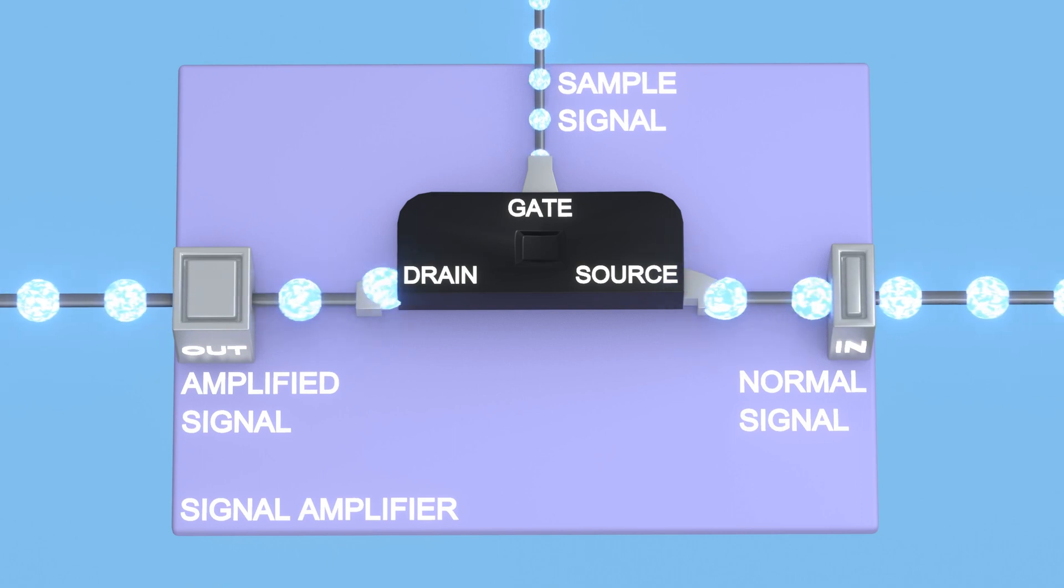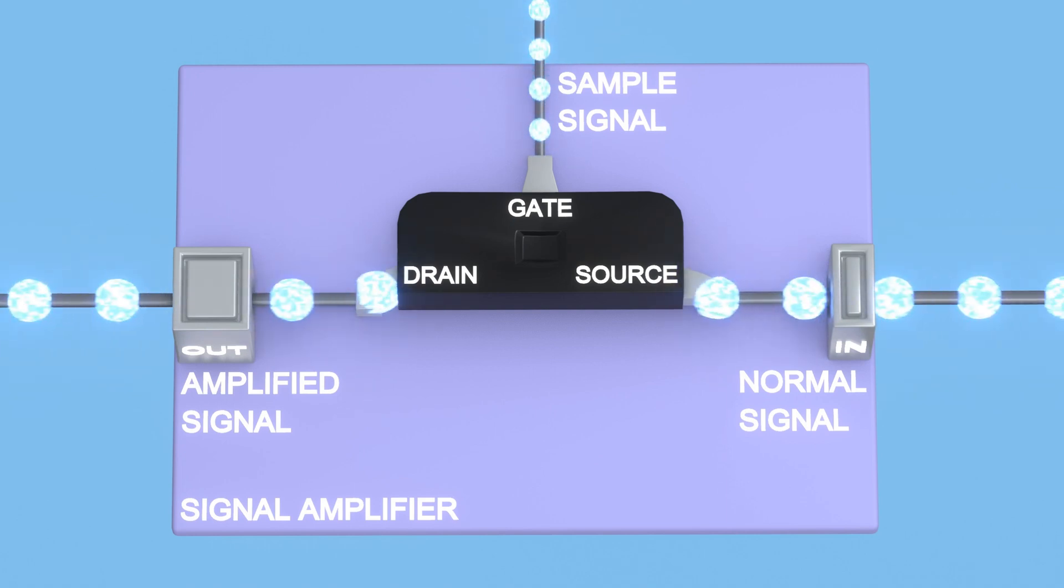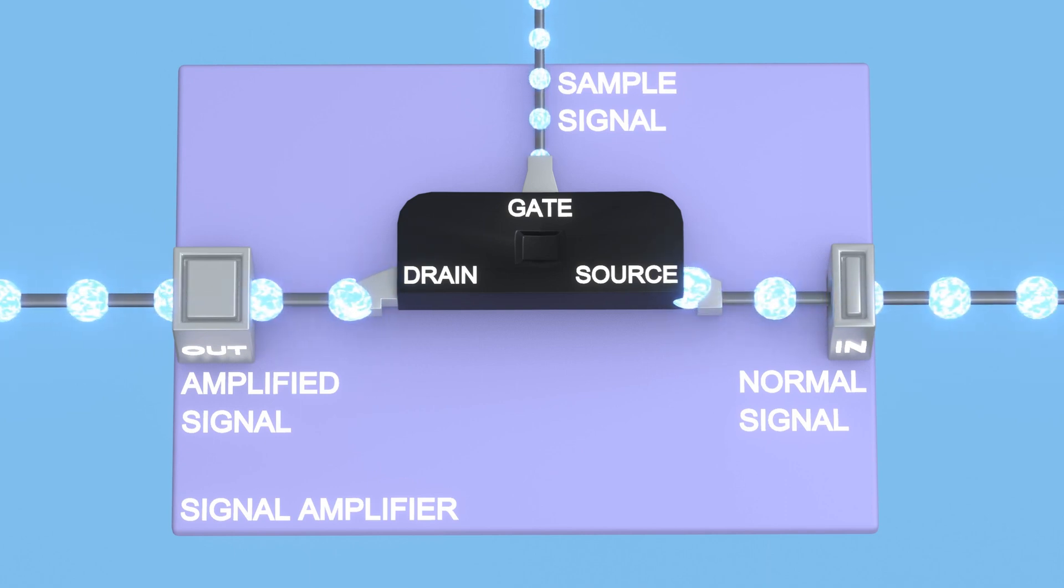In audio amplification, the audio signal to be amplified is applied to the gate terminal, causing a current to flow through the MOSFET. As the signal value increases or decreases, the current through the MOSFET also varies, but it is significantly higher than the original signal. Consequently, the signal is amplified.